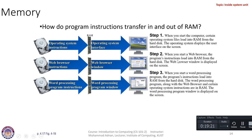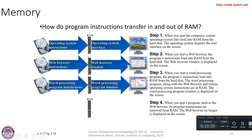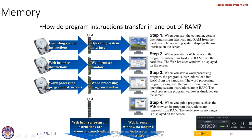In step two, when you start a web browser, the program instructions load into RAM from the hard disk. The web browser window is then displayed on the screen. In step three, when you start a word processing program, its instructions also load into RAM from the hard disk. Now the RAM contains certain operating system files, web browser instructions, and word processor instructions all at once. If you have a larger RAM, your computer can execute more programs concurrently without hanging.